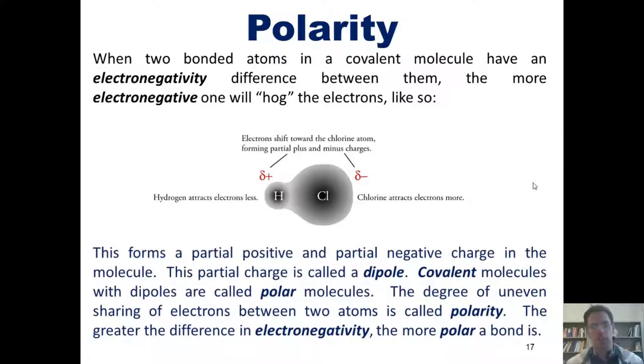Now, this partial charge difference is called a dipole. Covalent molecules with dipoles are called polar molecules. The degree of uneven sharing of electrons between two atoms is called polarity. The greater the difference in electronegativity, the more polar a bond is.